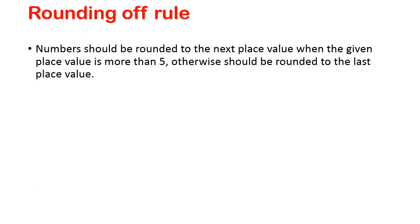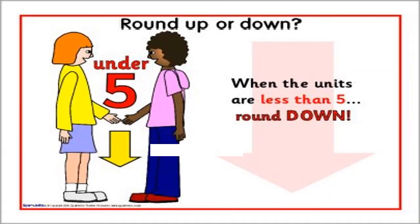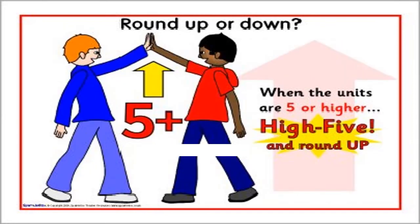Rounding off rules — we have already learnt these, now we are just recalling. A number should be rounded to the next place value when the given place value digit is more than 5. Otherwise it should be rounded to the last place value. If the number is less than 5, we round down. When the number is greater than or equal to 5, we round up.